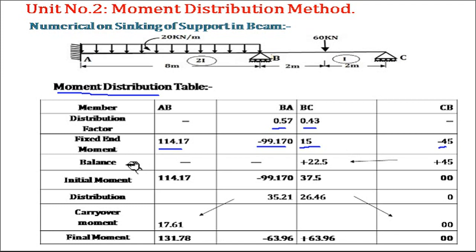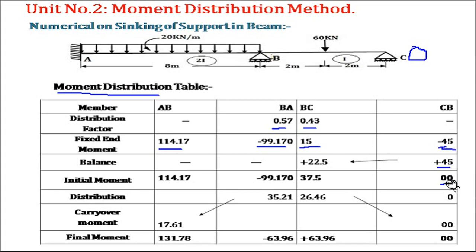Next is the balance or correction. At joint C there is a simple support, so the moment in member CB must equal zero. In the table the value is minus 45, so we apply a correction of plus 45 to make it zero. Since at CB we apply plus 45, half of this gets carried over to the far end BC. So 45 divided by 2 gives plus 22.5, which is added to member BC.